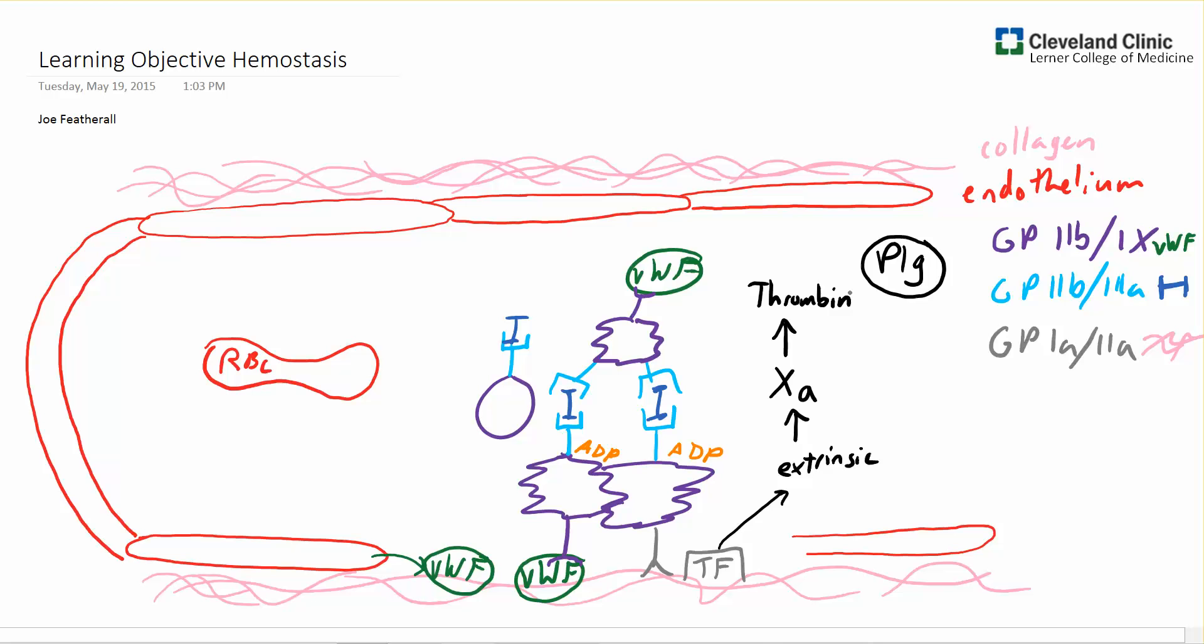The contemporary view is that thrombin actually starts the intrinsic pathway. And the intrinsic pathway also leads to the activation of factor 10. As you can see, this creates a positive feedback loop that produces a tremendous amplification of the tissue factor signal, creating a lot of thrombin.